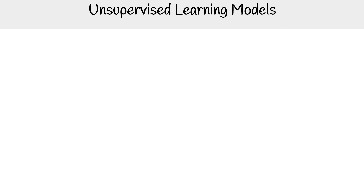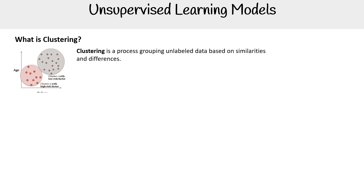Let's take a look at unsupervised learning. So what can we do here? We have clustering. We've covered these prior, but I just really want to make sure that you know what they are. Clustering is a process of grouping unlabeled data based on similarities and differences.